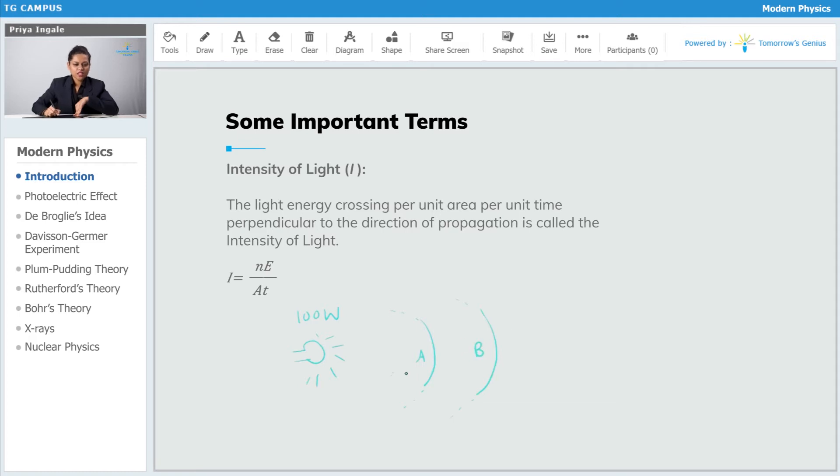Now, if I stand near area A and area B, I will experience different effects of that light. If I stand near area A, I will feel more intense light, and if I stand near area B, I will feel less intense light.